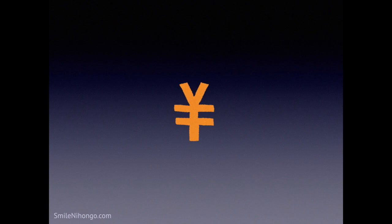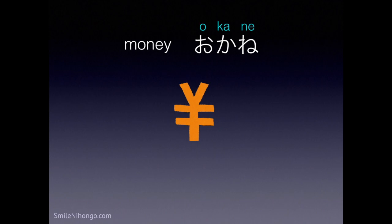So if you have an upcoming trip to Japan, you may find this lesson quite useful. Let's first learn how to say money in Japanese. Money in Japanese is okane. So Japanese money is nihon no okane.